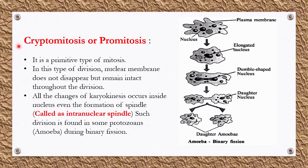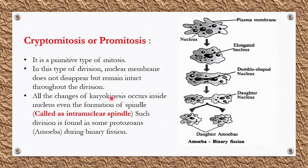First, let us discuss about cryptomitosis, which is also called promitosis. It is a primitive type of mitosis — a very initial type — during which the nuclear membrane does not disappear. As we have already discussed, during normal mitosis the nuclear membrane disappears during prophase, but here in this type of division the nuclear membrane will remain intact throughout the division.